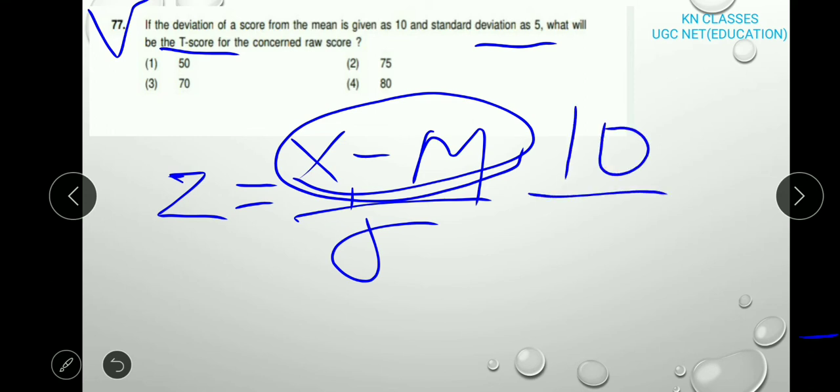Then standard deviation is 5. So here, 10 by 5, 10 by 5 is 2. So 2 is the Z score.